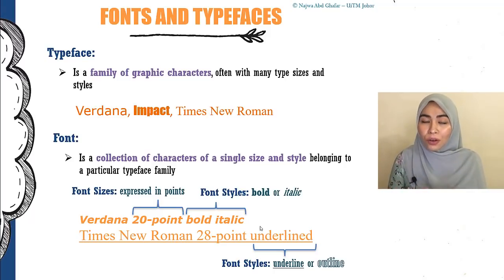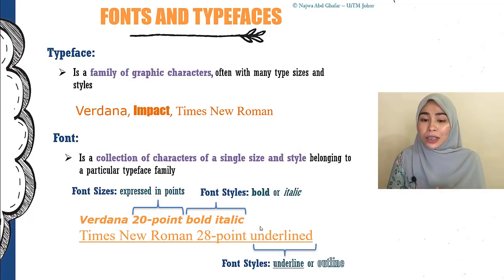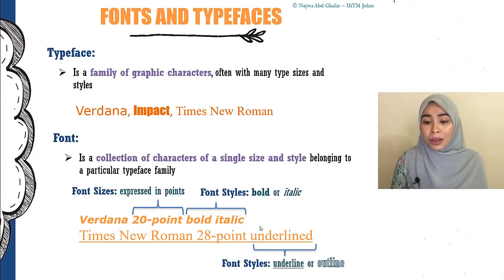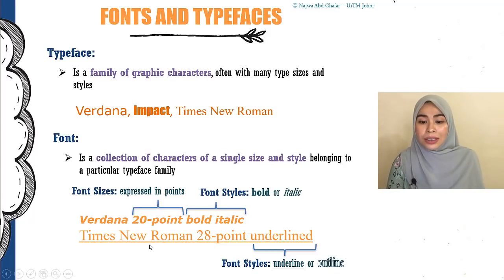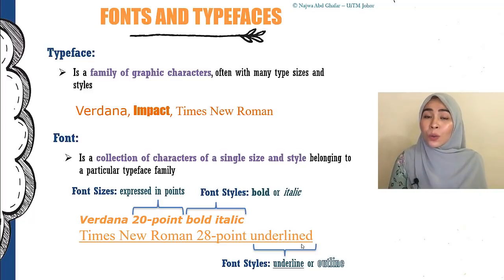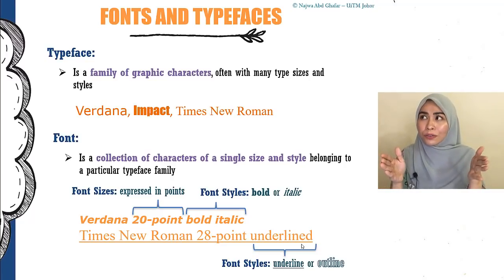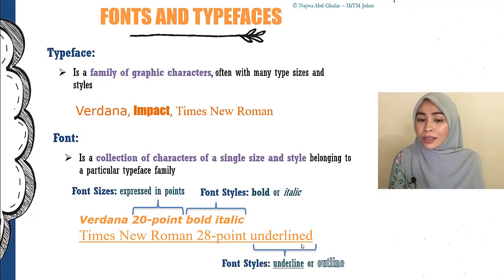So what is a font? A font is a collection of characters of a single size and style belonging to a typeface. For example, Times New Roman is a typeface. But within Times New Roman, there are many fonts you can choose. Font is a collection of that typeface of a single size and style. For example, Times New Roman 28 point underlined — that is one font. Or Times New Roman 12 point bold — that is another font, because you're specifying a particular size and style of that typeface.